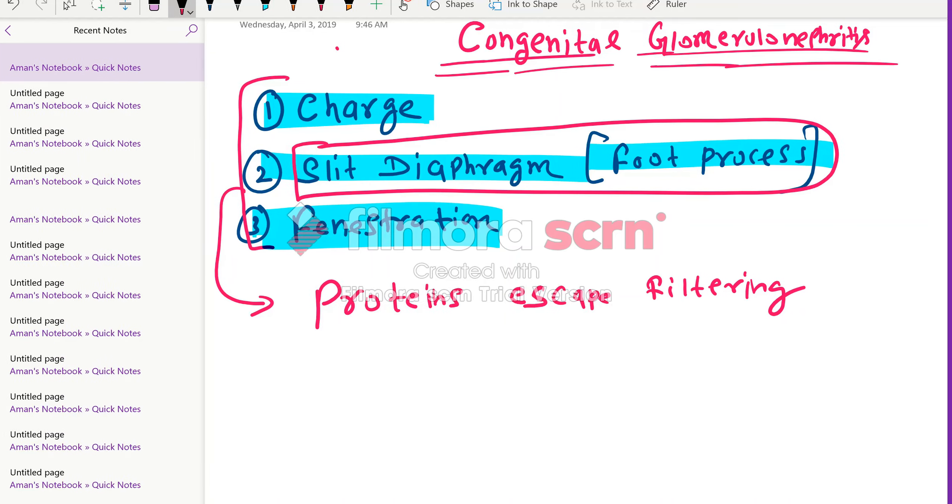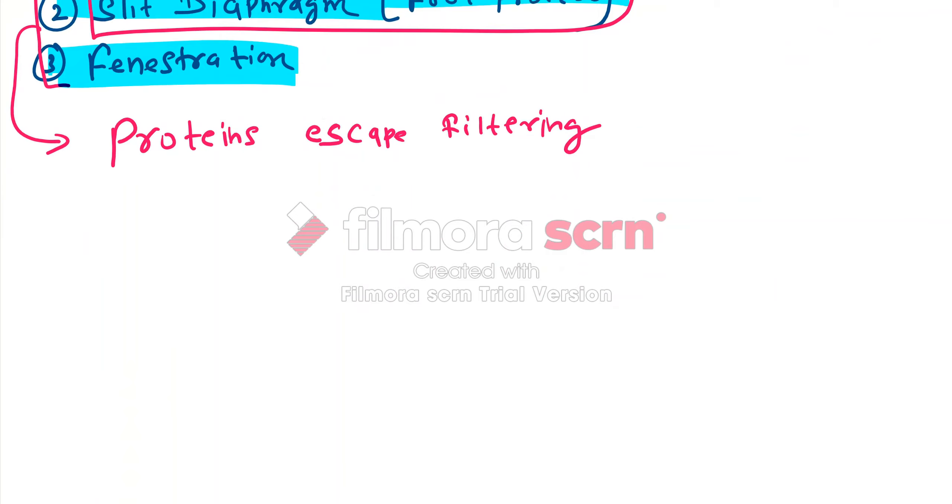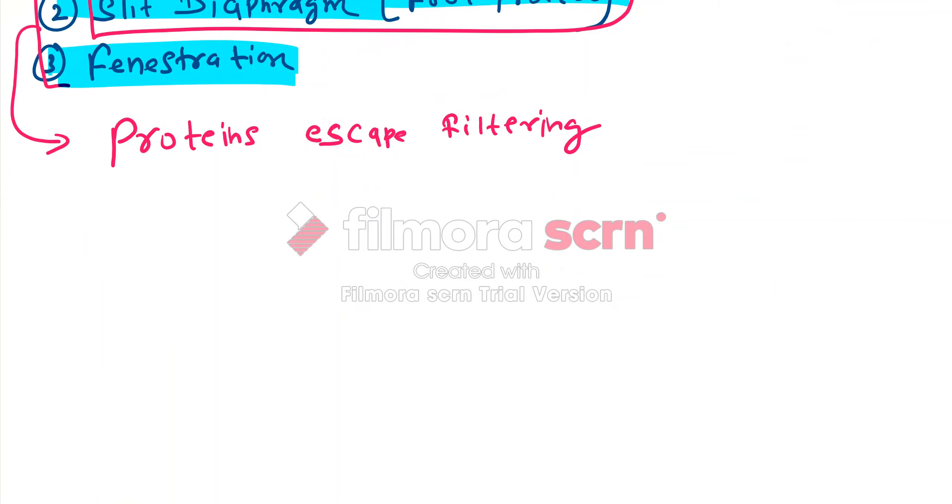If you know this slit diaphragm, then you are knowing about congenital glomerular nephritis. The slit diaphragm is made up of three proteins.